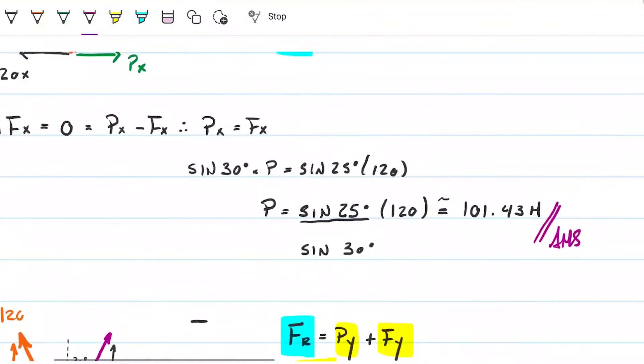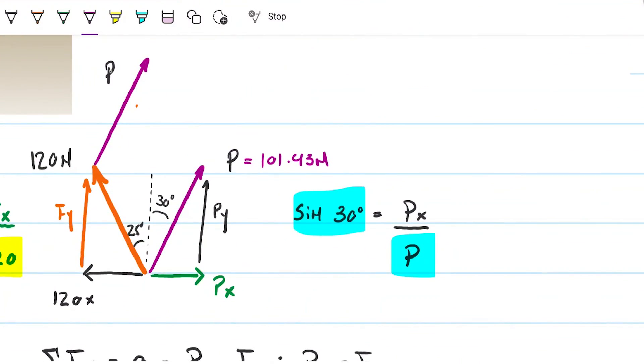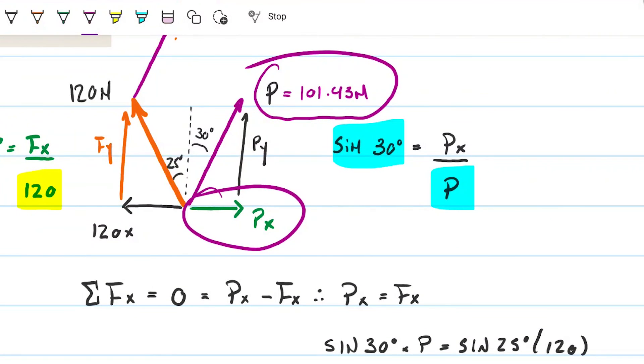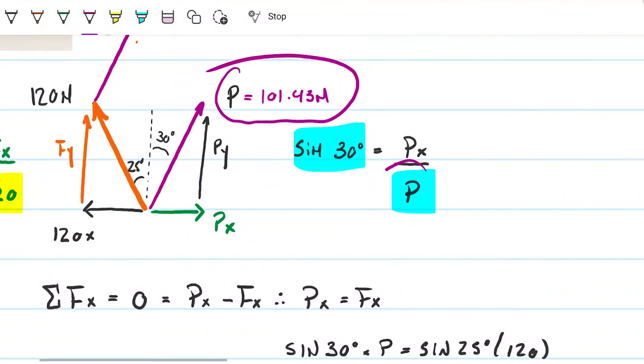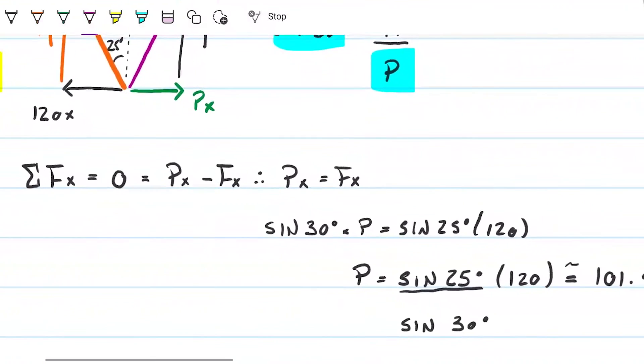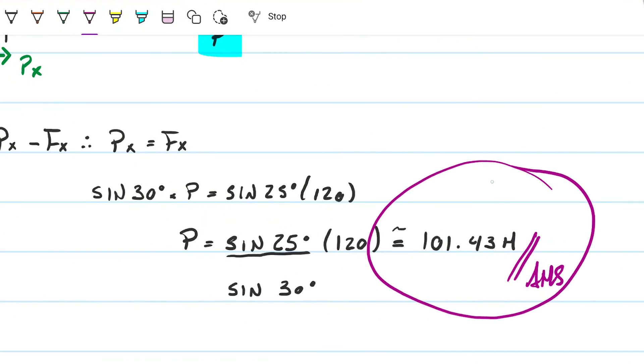So that the resultant force is vertical. To do that, we have to decompose this force P into its horizontal component, Px, and we made the horizontal component equal to the horizontal component of the force that we did know, the 120. Because they need to cancel each other out so that the resultant force is vertical. We're canceling out the horizontal component. Once we did that, we were able to calculate P. We were able to calculate P because the only unknown is then P. We did that, we calculated P. P is 101. Beautiful.